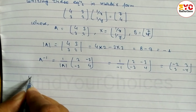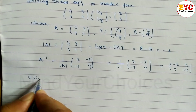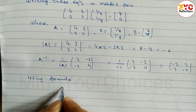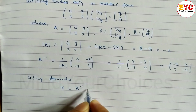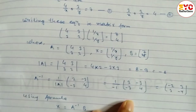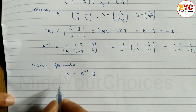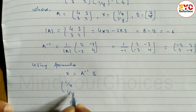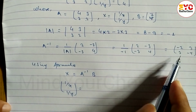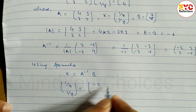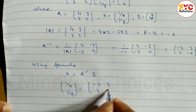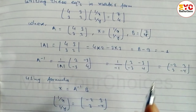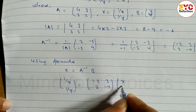Using the formula x = A⁻¹b, the value of x, which is [[1/x], [1/y]], equals A⁻¹ × b. So we write [[1/x], [1/y]] = [[−2, 3], [3, −4]] × [[7], [4]].